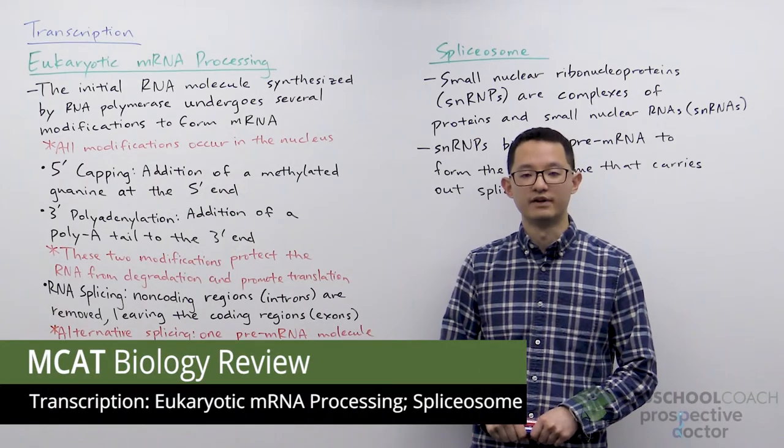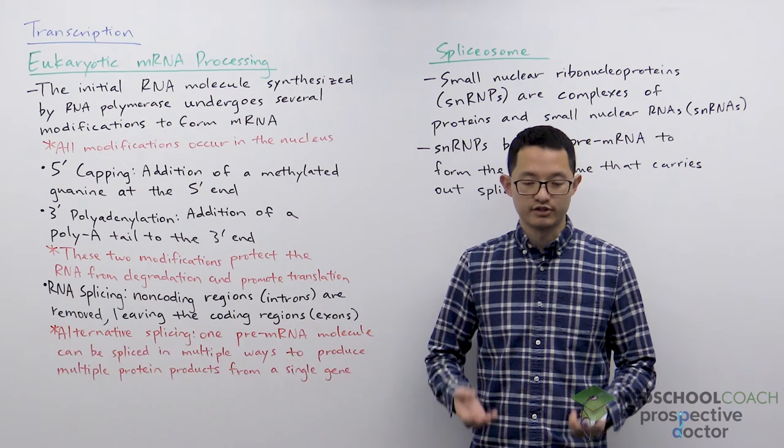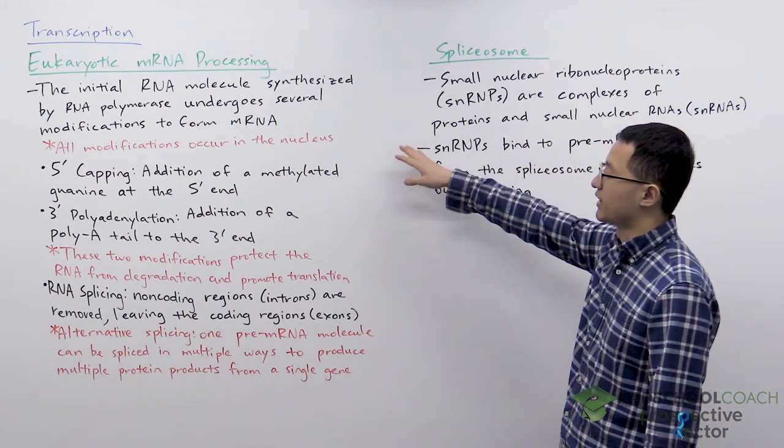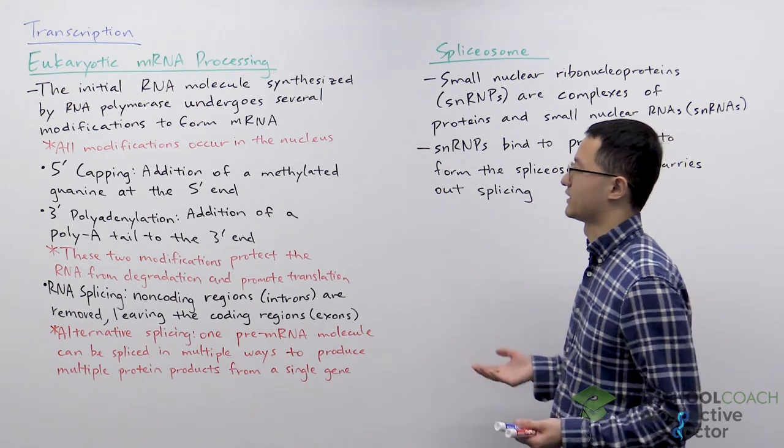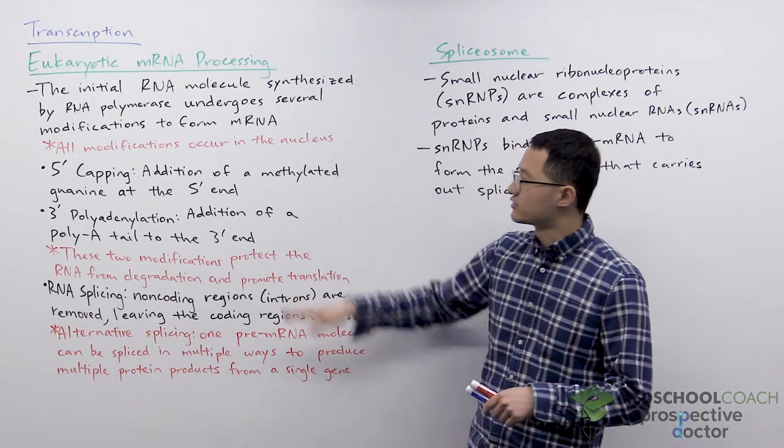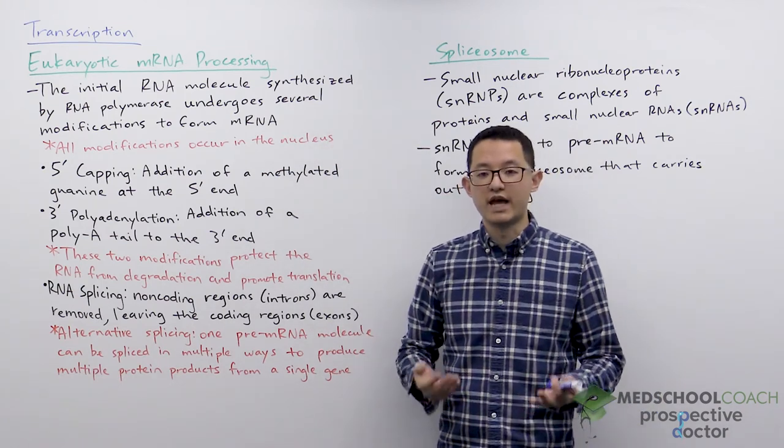In this video we're going to go over eukaryotic mRNA processing or post-transcriptional modifications. Eukaryotic mRNA processing refers to the fact that the initial RNA molecule that RNA polymerase synthesizes is going to undergo several modifications before forming what is called mRNA.